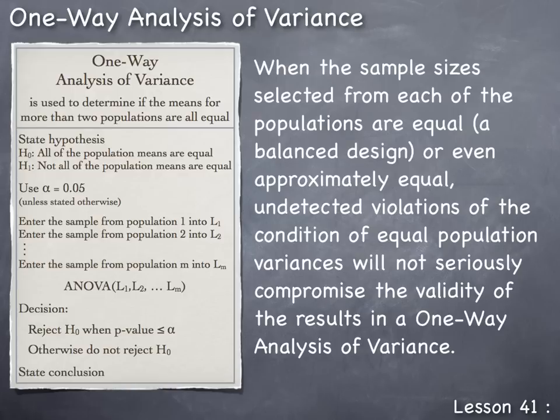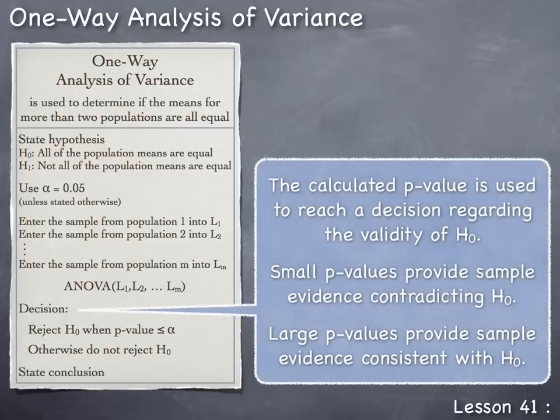While conducting a one-way analysis of variance, the calculated p-value is used to reach a decision regarding the validity of H₀. Small p-values provide sample evidence contradicting H₀, so whenever the p-value is less than or equal to α, we reject H₀. Large p-values provide sample evidence consistent with H₀, so whenever the p-value is greater than α, we do not reject H₀.